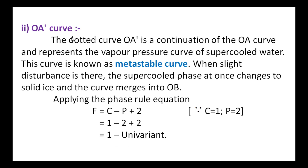The second curve is OA', the dotted metastable curve. OA' is a continuation of the OA curve and represents the vapor pressure curve of supercooled water. This curve is known as the metastable curve. When a slight disturbance occurs, the supercooled phase at once changes to solid ice and the curve merges into OB.